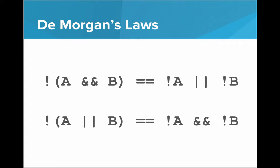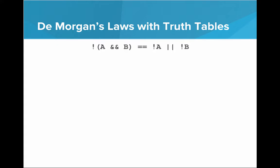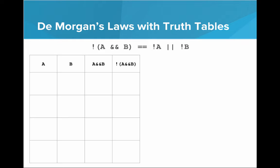Looking at it with Venn diagrams is definitely challenging, so to prove this even further, we can use truth tables to really cement that this is in fact true. For the left side, let's build NOT (A AND B). Every combination of A and B: true/true, true/false, false/true, false/false. A AND B gives true, false, false, false. Negating that column gives NOT (A AND B) = false, true, true, true.